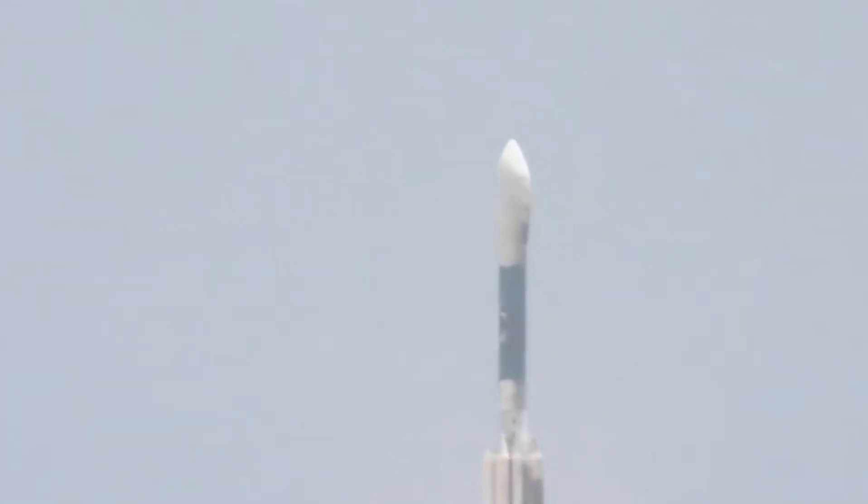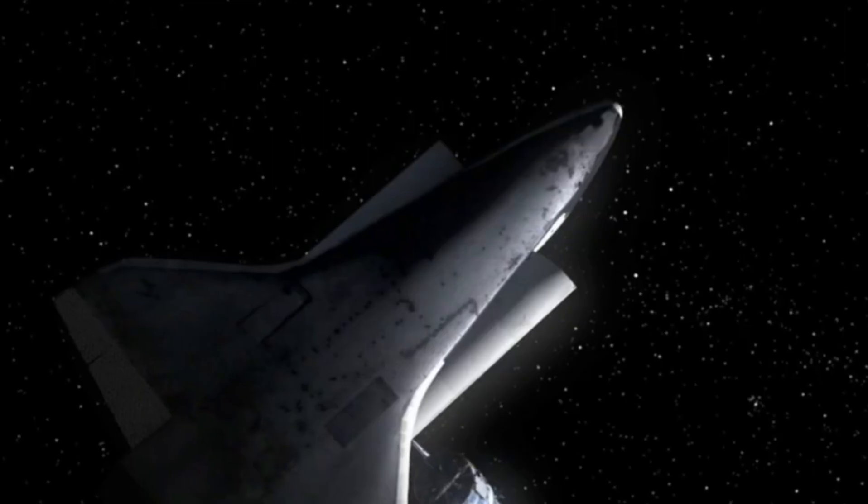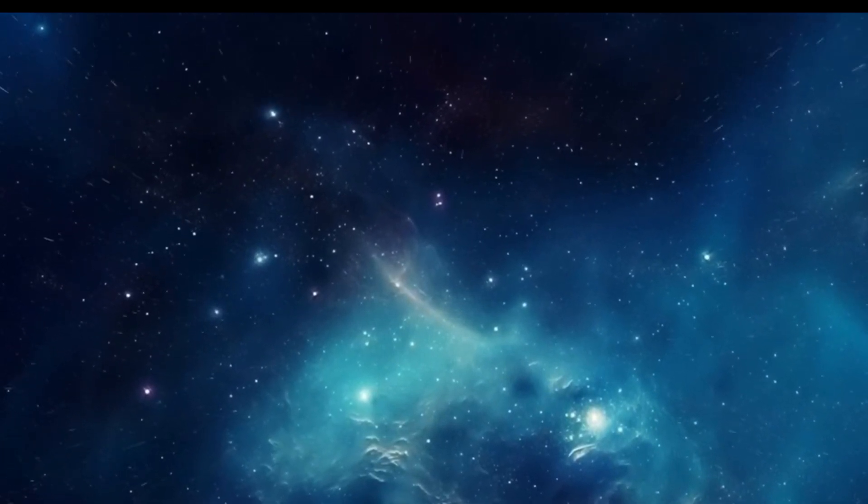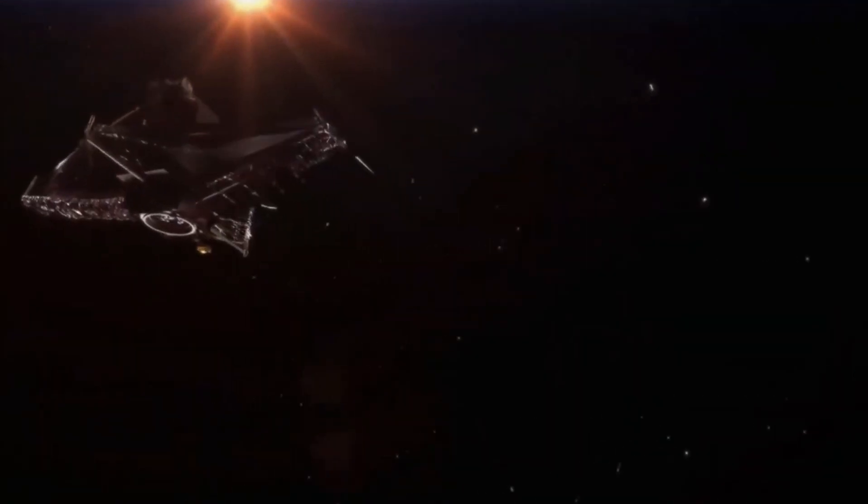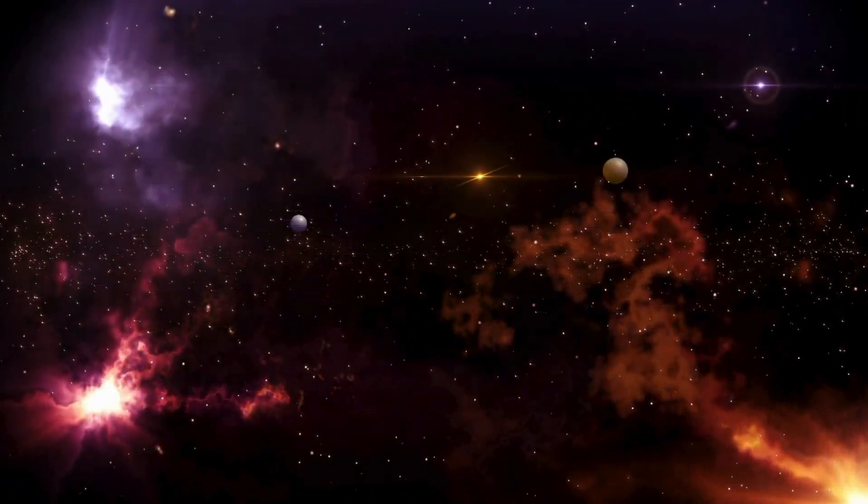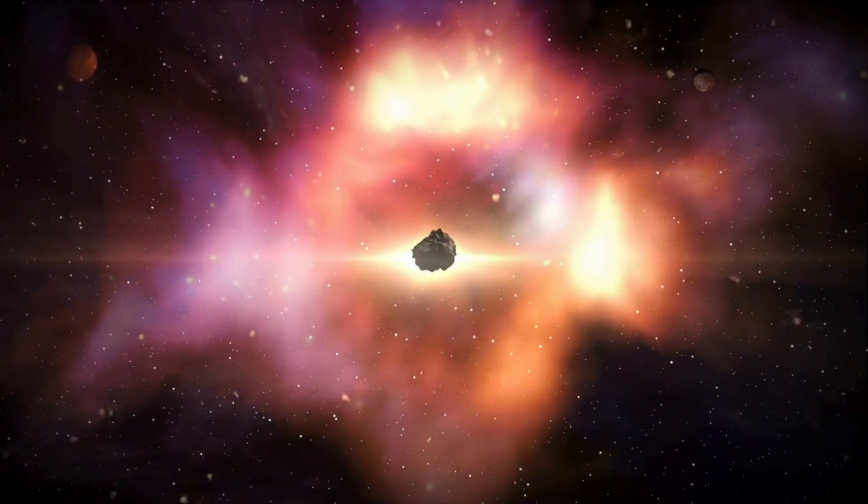One planet is Proxima Centauri b, an exoplanet residing within the habitable zone of the red dwarf. Alongside its disputed counterparts, Proxima c and Proxima d, it stands as one of the nearest known exoplanets to our solar system. So, is this planet habitable? Well, not as much as one might think. Significant obstacles prevent life from thriving on Proxima Centauri b due to a number of variables. The star's activity and the tidal-locking phenomenon make it difficult to live on this planet.